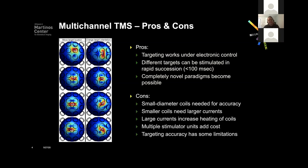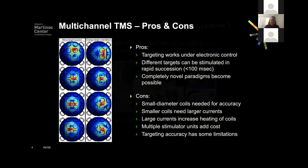There are always trade-offs in this approach. If you start building smaller coils, you need more current to stimulate the brain, and the larger currents result in more heat dissipating in the coils. You need multiple stimulator units, which adds cost. The targeting accuracy also has some limitations because we use the degrees of freedom offered by these 16 channels to shift the target around and shape the field, so there are limitations on what you can do.